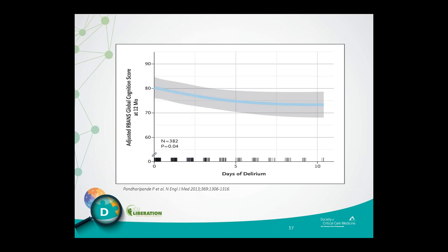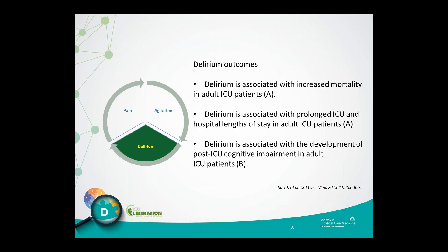More results from the Brain ICU study show that the more days with delirium in the ICU, the worse your cognitive scores at one year. If we can shorten the duration of delirium or prevent it altogether, we can help improve both shorter- and long-term outcomes. To highlight delirium outcomes from the 2013 PAD guidelines: delirium is associated with increased mortality, prolonged ICU and hospital length of stay, and development of post-ICU cognitive impairment.